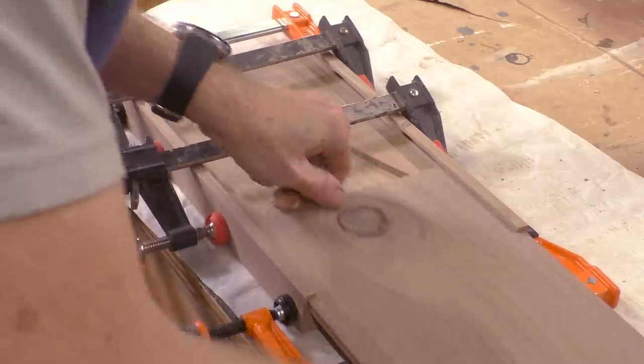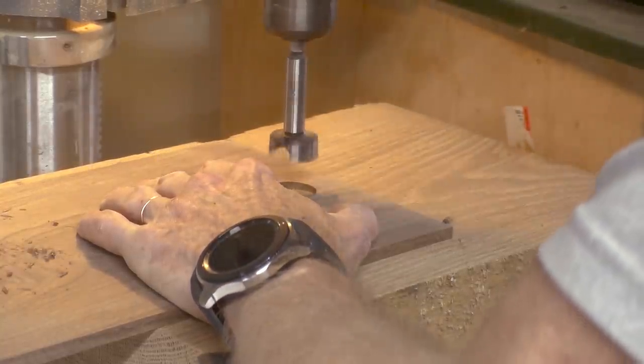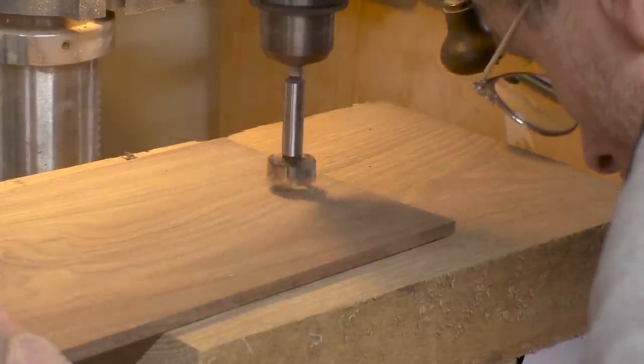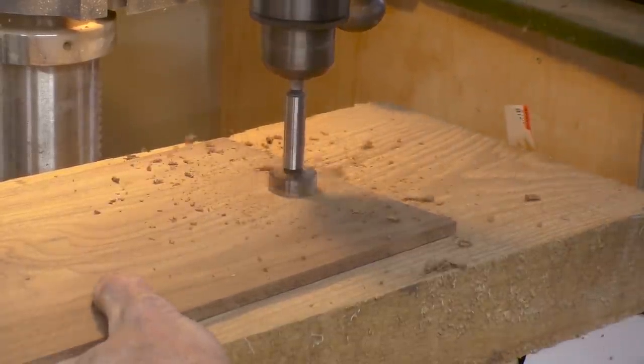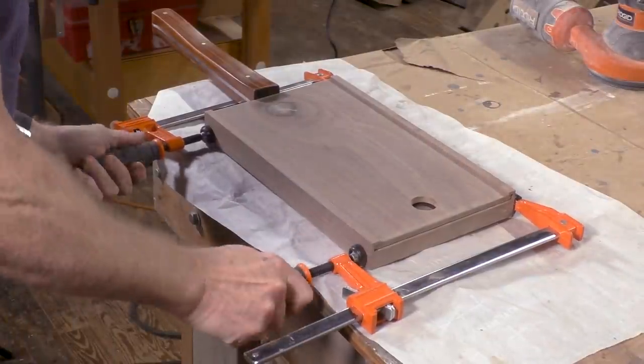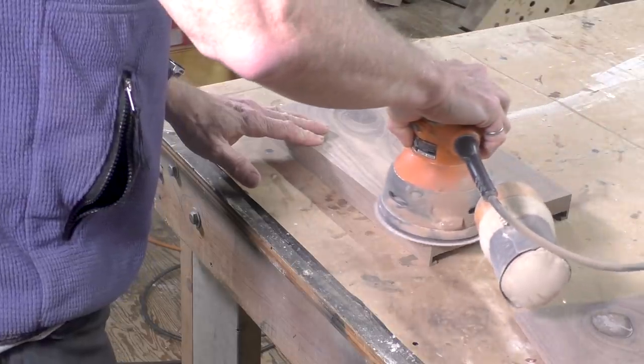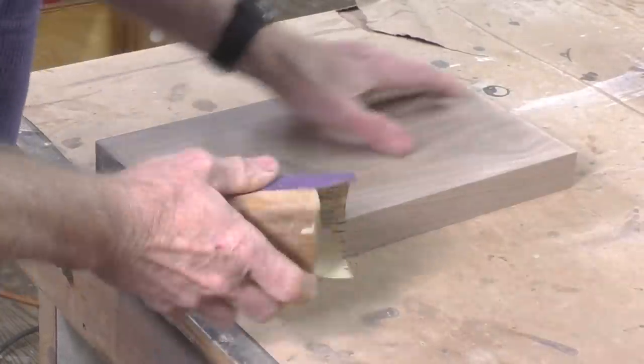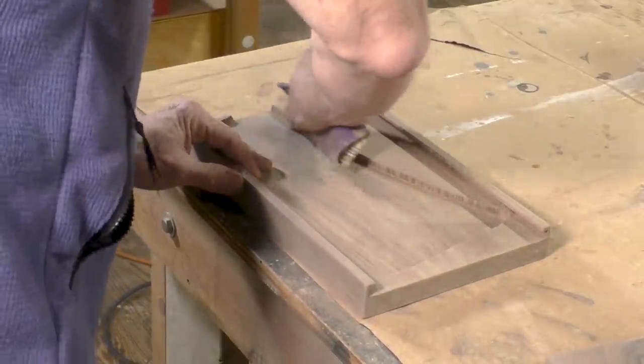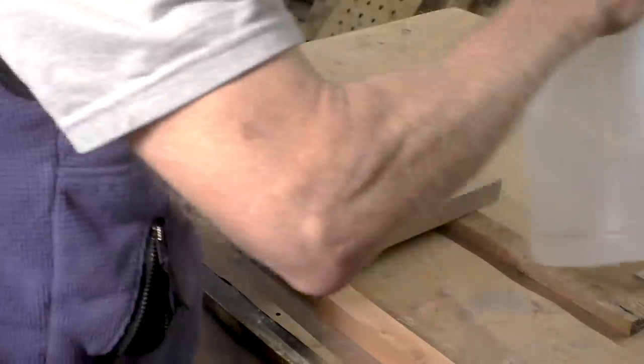I trimmed the sliding top to be a little bit narrower so that it would fit into the dados. And now I'm going to drill a hole through the top to make it easy to pull in and out. I slid the lid back in while it was still clamped. And now I'm going to sand it all around. And then I'll apply some mineral oil as a finish.